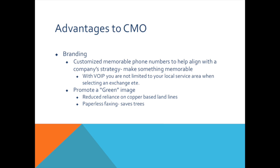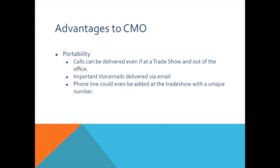The CMO can also use the voice over IP system for branding. They can have a customized mobile phone number to help align with the company's strategy — something that the customer will remember or think of to call when they need the service. With voice over IP, you're not limited to your local service area when selecting an exchange, which opens up a whole new realm of phone numbers you can use for your business. Also, you can use voice over IP to promote a green image, such as reducing your reliance on copper-based landlines and paperless faxing to save trees and help the environment. Numbers are portable, calls can be delivered if you're at a trade show, and you can set up an additional temporary phone line specifically for customers at that show.